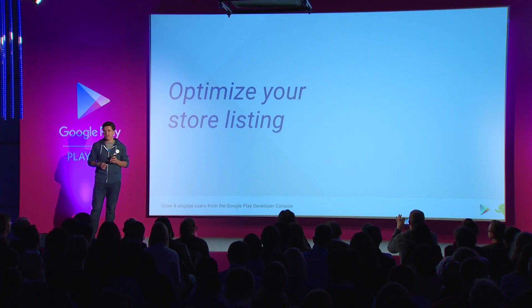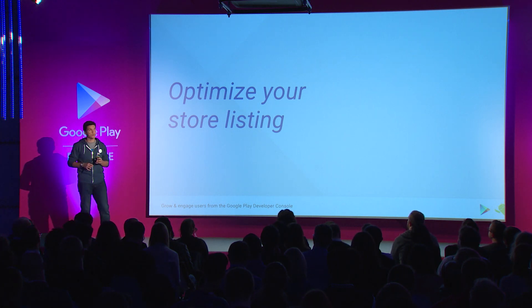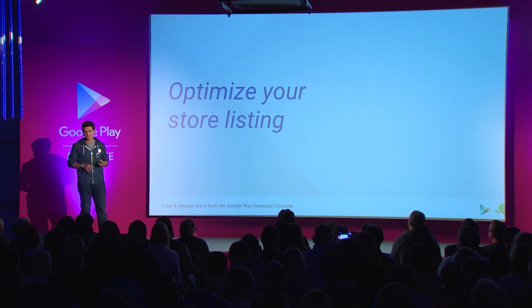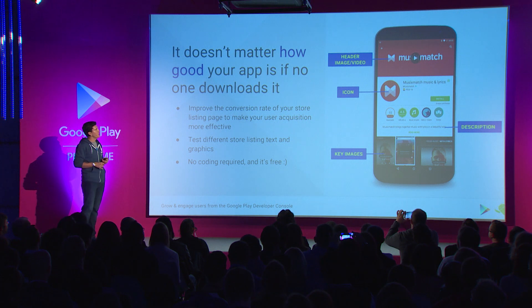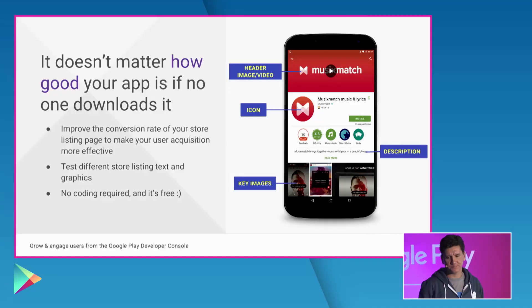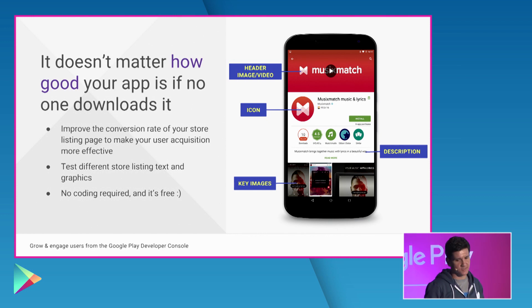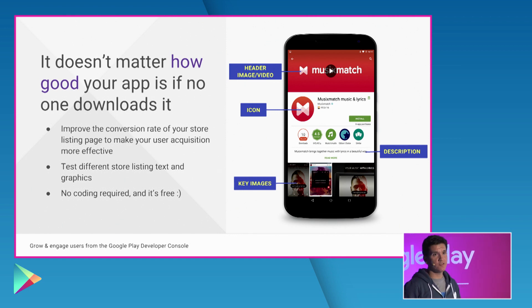Now that you know your conversion rate between a store listing visit and an install, let's see how you can improve it with store listing experiments. Store listing experiments is another feature we launched at Google I/O. Experiments allow you to use data rather than your intuition to optimize the text and graphics on your store listing page in Google Play. The store listing page is where your users make a decision whether or not to install your app. You can make this page more effective and improve its conversion rate. It can also help you iterate on which parts of your marketing or product resonate most with your users.